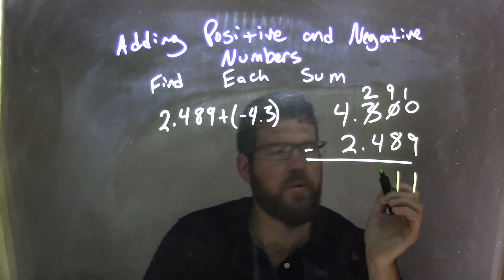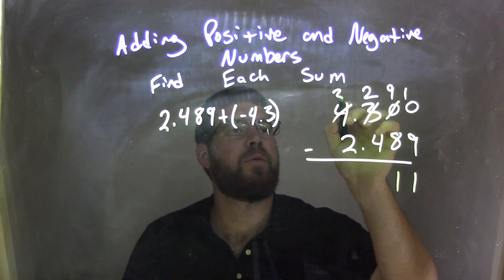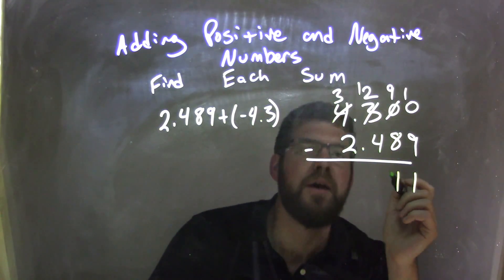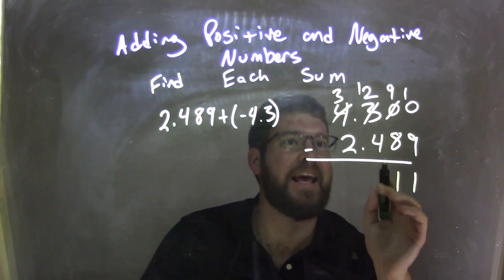And, well, 2 minus 4, I can't do that one, so let's grab another one here. I'll put a 3 up there, make that a 12. Now I have 12 minus 4, which is 8.